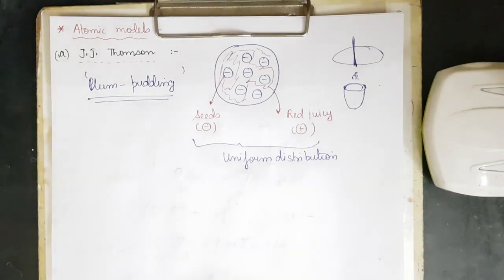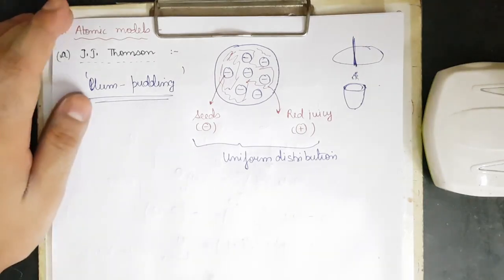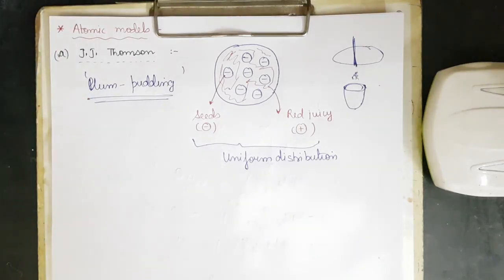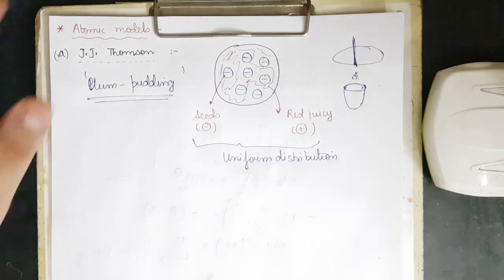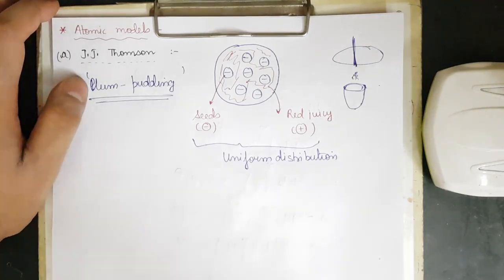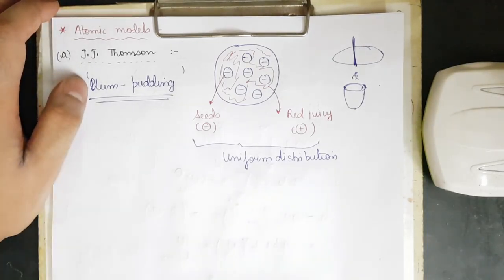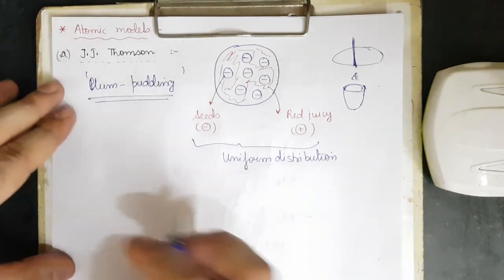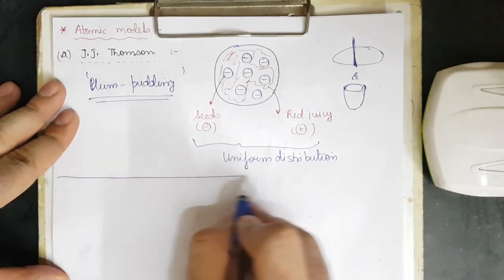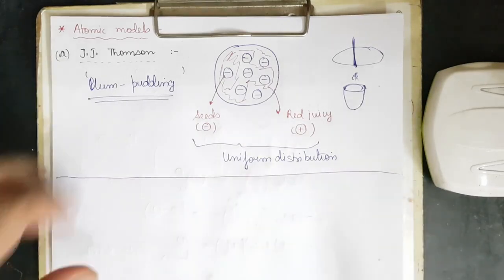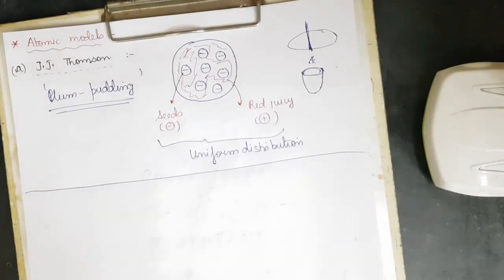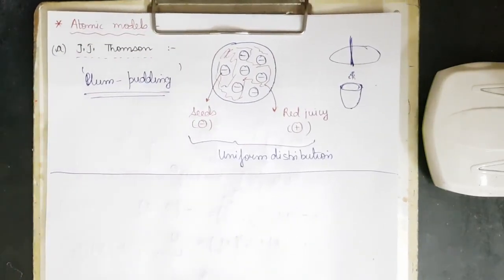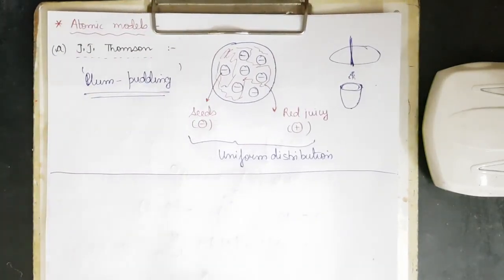This was video one on atomic structure, covering the distance of closest approach and the J.J. Thomson model. In the next video we shall discuss the discovery of electrons, protons, and neutrons, and the Rutherford model. If you have any doubts, ask in the comment section. You can also find me on Unacademy where I've covered entire organic chemistry and started mathematics. Best of luck to all of you — thank you.